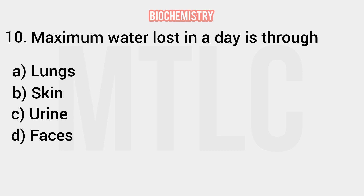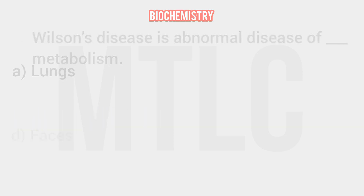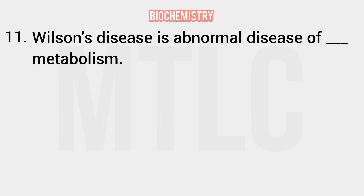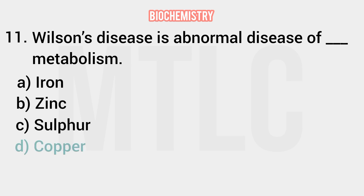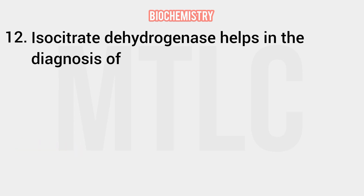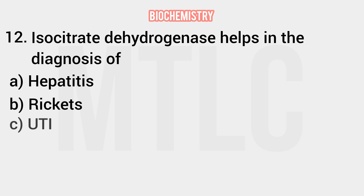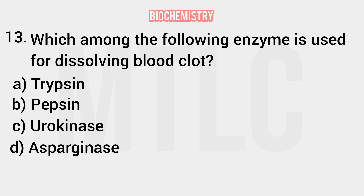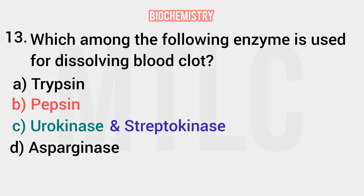Question number 10: maximum water lost in a day is through urine — that is the right answer. Wilson's disease is the abnormal metabolism of copper. Isocitrate dehydrogenase helps in the diagnosis of hepatitis. Which enzyme is used for dissolving blood clots? The right answer from the options is urokinase. Streptokinase and urokinase are both used to dissolve blood clots, but from the given option, urokinase is the right answer.